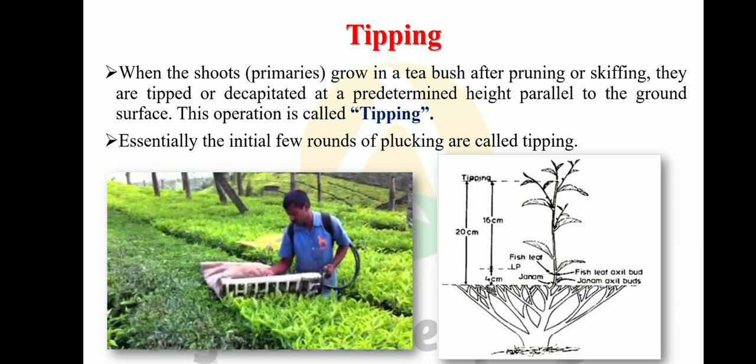Tipping is associated with the tea crop. When shoots grow in tea after pruning or skiffing, they are tipped and dissipated at a predetermined height parallel to the ground surface — this operation is called tipping. Essentially, the initial and subsequent pluckings are also called tipping. In the photograph, a farmer is doing the tipping exercise with machines.